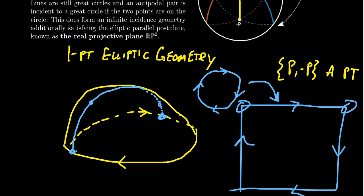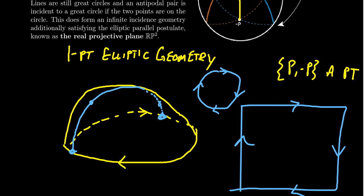In topology we don't care about sharp corners versus round corners — you can continuously deform a circle into a square. So these give us different models of the projective plane, none of which allow us to draw it without this wraparound feature. In this model, there is this wraparound line, often referred to as the line at infinity.